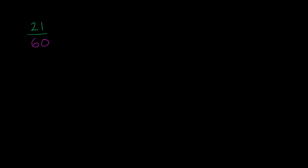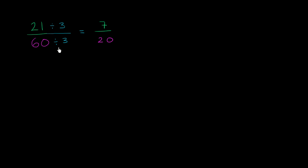So let's rewrite this with lower numbers by dividing both the numerator and the denominator by their common factor of 3. Dividing by 3, I'm just rewriting this as an equivalent fraction. 21 divided by 3 equals 7, and 60 divided by 3 equals 20. So we've rewritten 21 sixtieths as 7 twentieths.